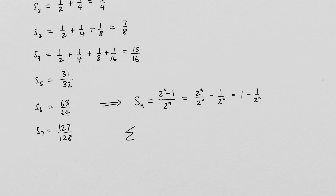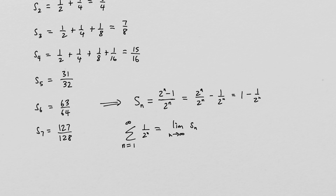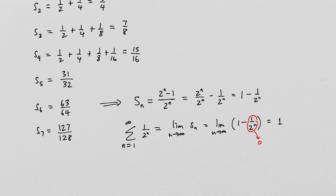So the sum of the series n equals 1 to infinity of 1 over 2 to the n equals the limit as n goes to infinity of the nth partial sum. When we let n go to infinity, we are essentially adding up all infinitely many terms. This limit equals the limit as n goes to infinity of 1 minus 1 over 2 to the n, which is clearly 1, since 1 over 2 to the n goes to 0. So the sum of the series is equal to 1.